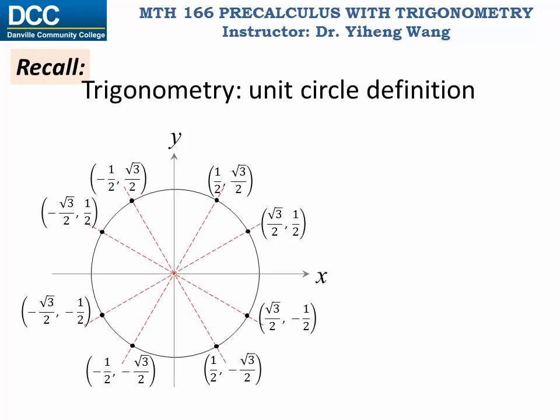You have seen this image before, and you know that we can use the coordinates of these points on the unit circle to determine the trigonometric function values for a given angle in its standard position. These are special points, and did you notice there's a certain symmetry in these points?